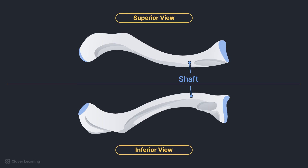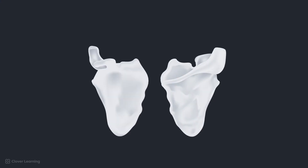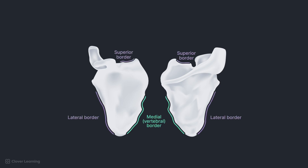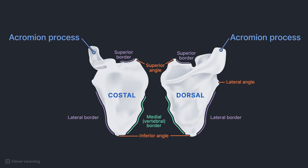Clavicles in males typically have a more prominent curve. The lateral end, furthest from the center of the body, is termed the acromial extremity and articulates with the acromion of the scapula. The medial end, closest to the center of the body, is termed the sternal extremity and articulates with the manubrium of the sternum and first costal cartilage. The scapula, commonly referred to as the shoulder blade, is a flat triangular bone with three borders — medial or vertebral, superior, and lateral or axillary — three angles — superior, lateral, and inferior — and two surfaces: costal and dorsal. The acromion process extends laterally over the head of the humerus, the coracoid process projects anteriorly beneath the clavicle, and the spine runs along the dorsal or posterior surface from the vertebral border to the acromion.